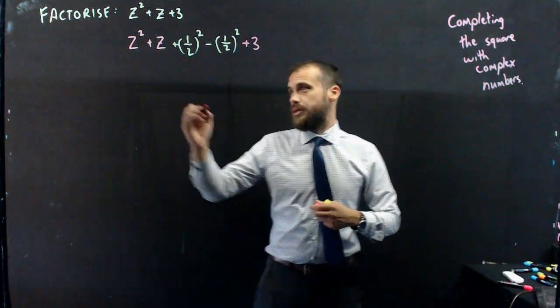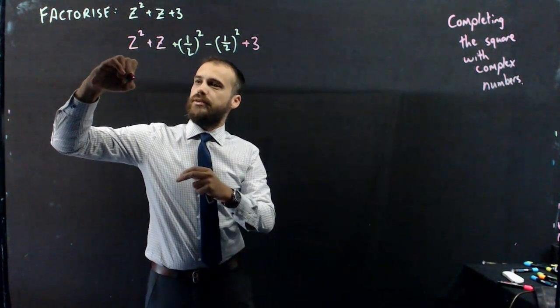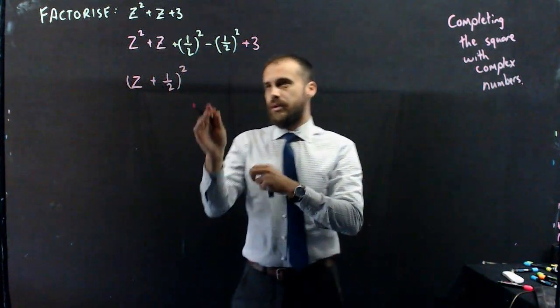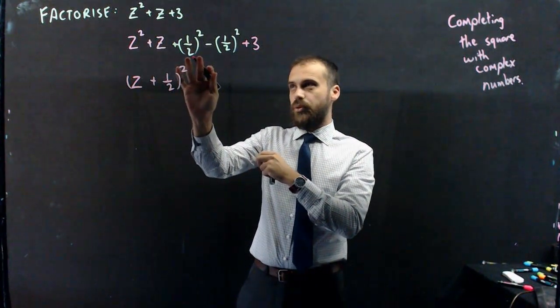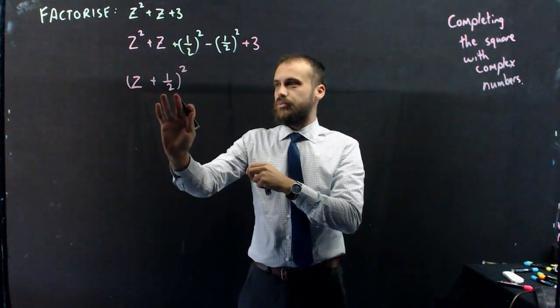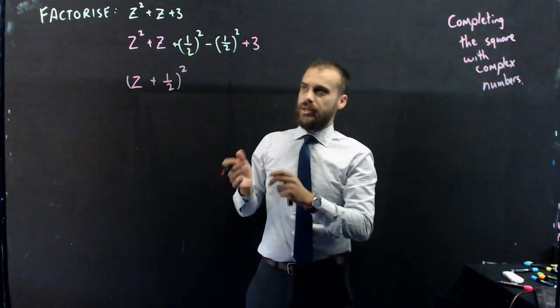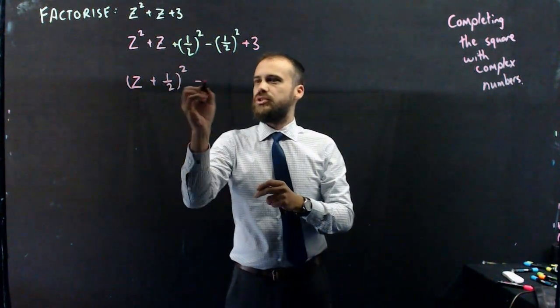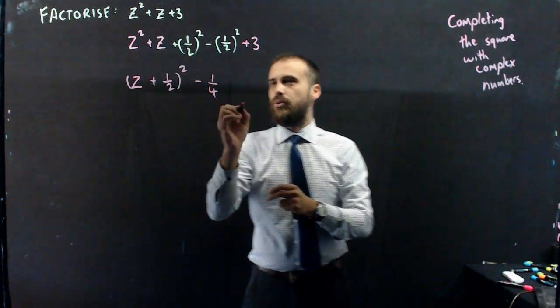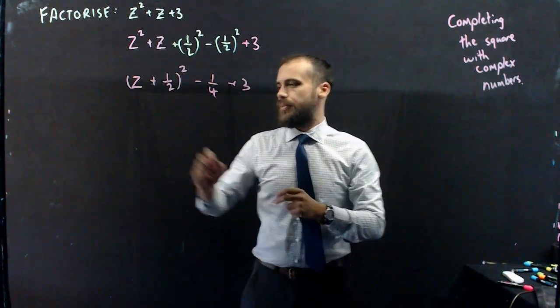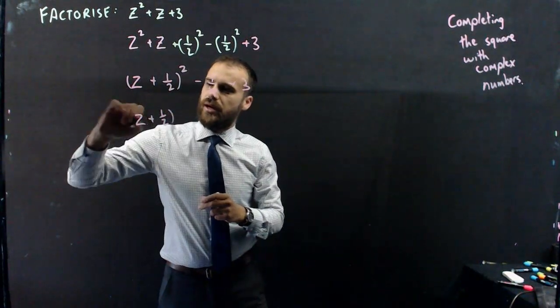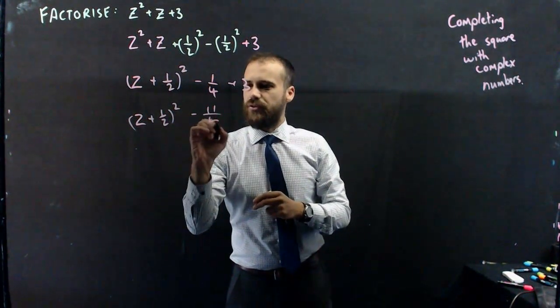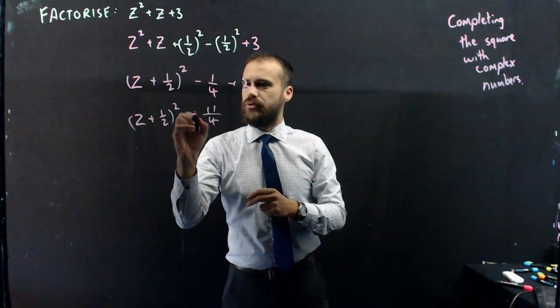So from here, we've got a perfect square right there: z plus 1 half squared. You can see we've taken whatever it was that we squared originally, and that's what goes in the brackets. You can expand it to test it, but that's what we're going to get. Minus a half squared. A half squared is a quarter plus 3. So z plus 1 half squared minus that's going to be like 11 over 4, but positive.